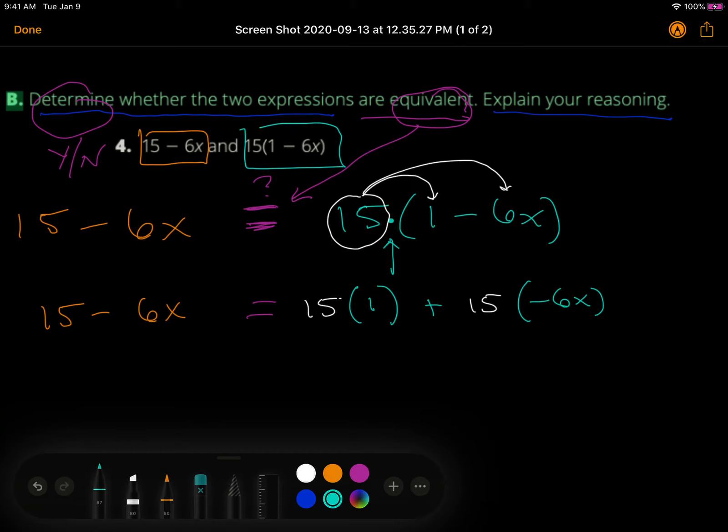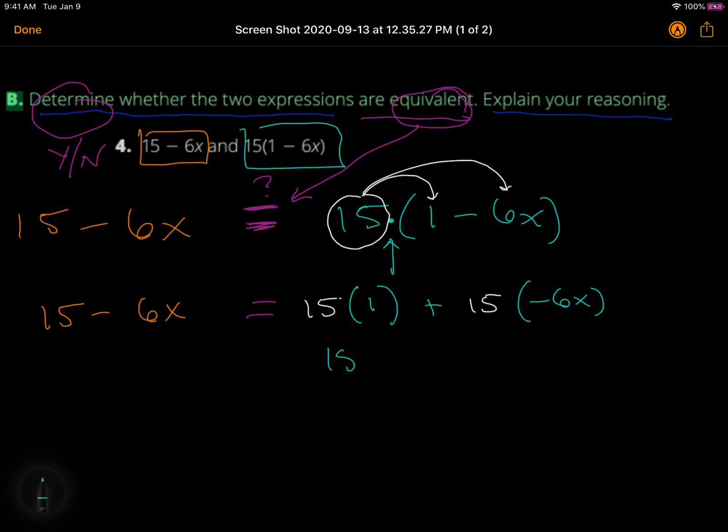So over here I'm going to have a 15. And 15, remember this is multiplication here, so that's going to be positive times a negative is going to give me a negative. 15 times 6 is going to give me a 90x.